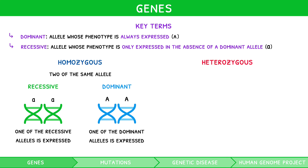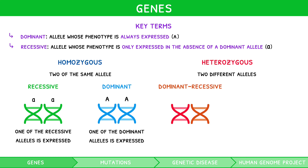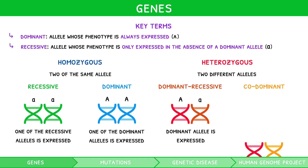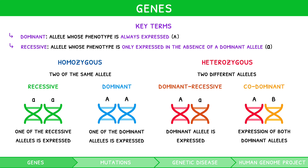Heterozygous: a genotype containing two different alleles, i.e., one dominant and one recessive. They are represented by an uppercase and a lowercase letter, i.e., uppercase A, lowercase a. Here, only the dominant allele is expressed in the phenotype. Codominant: a unique form of heterozygous genotype where two dominant alleles are present, rather than a dominant and a recessive. This results in the expression of both dominant alleles in the phenotype. The only time you will encounter this is with ABO blood groups, explored in the fourth video of our IB Biology Topic 3 video series.